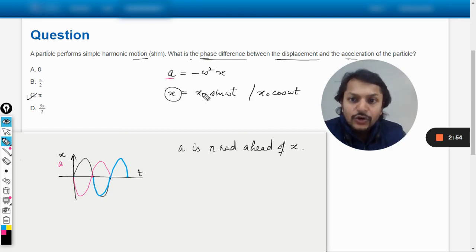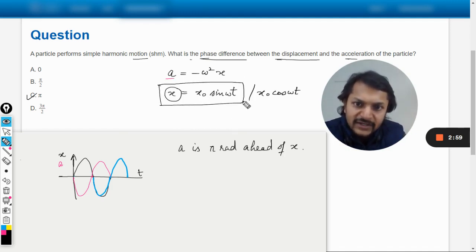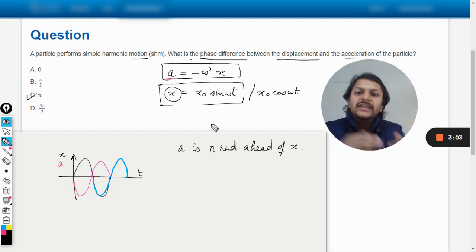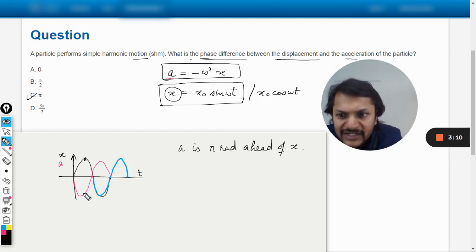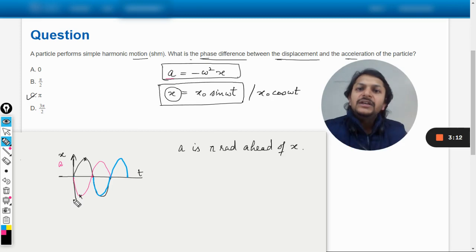So I will repeat myself. This is the function of the displacement and this becomes the acceleration. From here you can see that the acceleration will be 180 degrees opposite. It would be negative completely. So when the displacement is maximum, the acceleration is minimum.